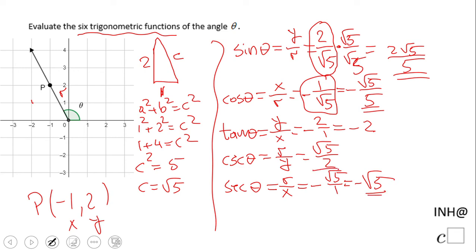And we have one more, the last one, which is cotangent of theta. That will be x over y, which is gonna give us -1 over 2.